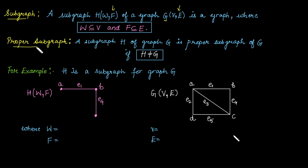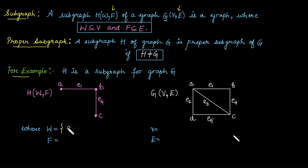It is called a proper subgraph if H is not equal to G. For example, we have two graphs: H and G. In H, the vertex set W contains vertices A, B, C, and the edge set contains E1 and E4.